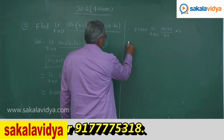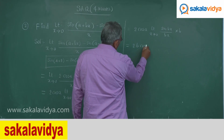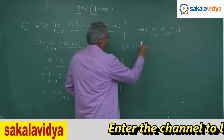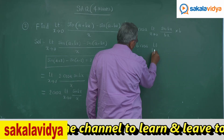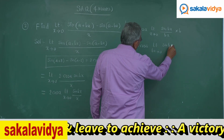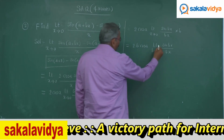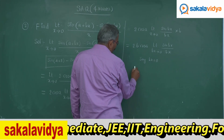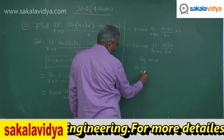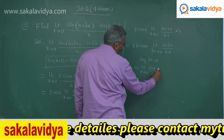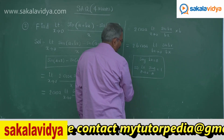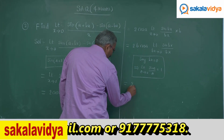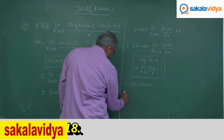As x tends to 0, bx also tends to 0, so we change the limit: limit bx tends to 0 of sine(bx) by bx. Using the important standard formula — limit theta tends to 0 of sine(theta) by theta equals 1 — this evaluates to 1. Since b is a constant, the final answer is 2b cos a.